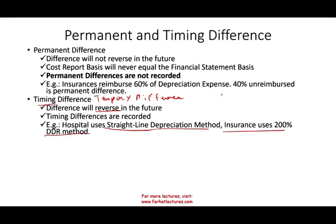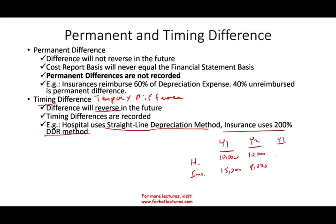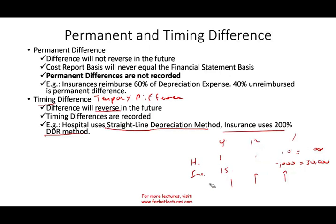In some years — for example, year one — the hospital may take $10,000 depreciation while the insurance company may take $20,000. In year two, the hospital takes $10,000 and the insurance company takes $8,000. In year three, the hospital takes $10,000 and the insurance company takes $7,000. Notice that in total they're equal to $30,000 over a three-year period, but every year they differ. In some years the hospital had more depreciation, in others less. This is what we mean by temporary differences — overall they equalize over the long period.